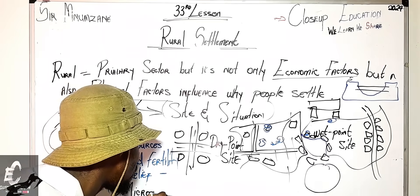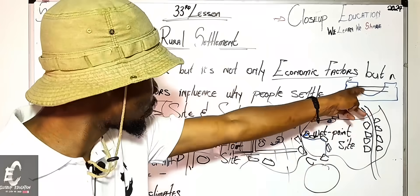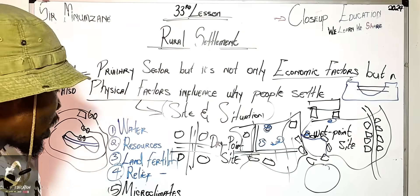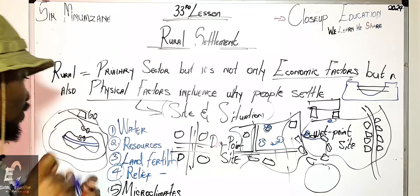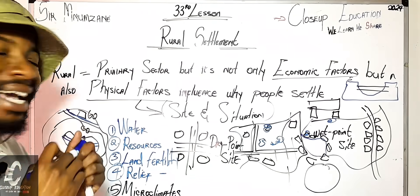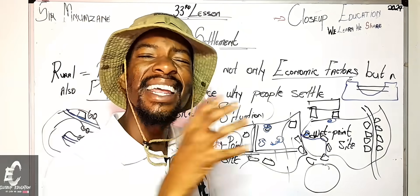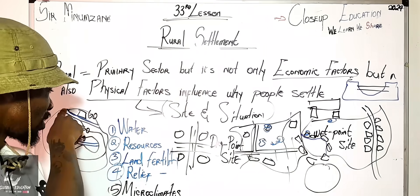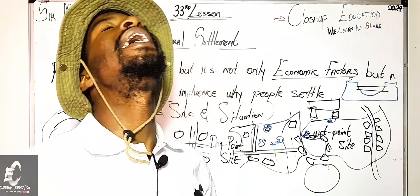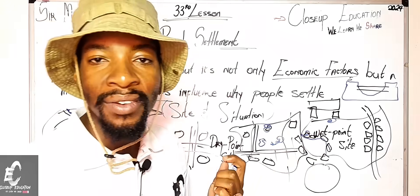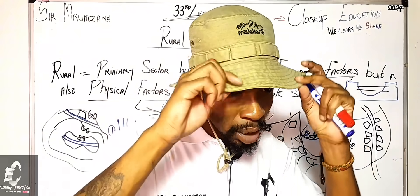Microclimate factors include invasion layers, wind, and slope aspects. If the river is flowing right next to the settlement — and the contour lines show the settlement at the same altitude as the river — that is a wet point site. The settlement is located near the permanent water source at the same contour level, meaning the same height and altitude. That is how you identify wet and dry point sites on a topographic map.